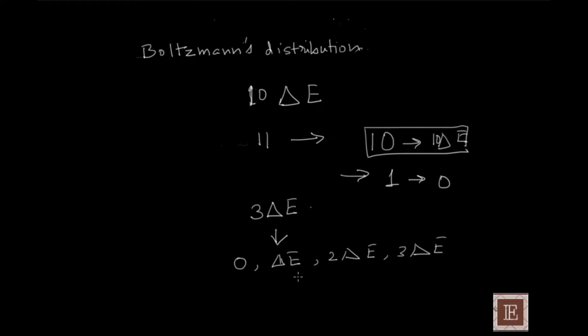Later on we will get a generalized expression from this by making δe tend to zero. When δe goes to zero we have a large number of energy states, and we can then do a calculation on a large number of particles with a large number of energy states. But for simplicity, let us do the approximation based on only three energy states and four particles.